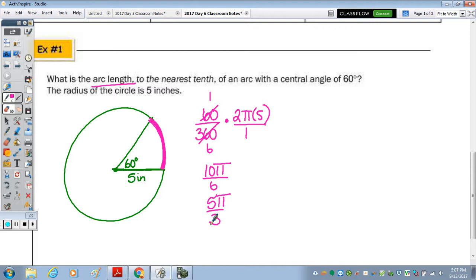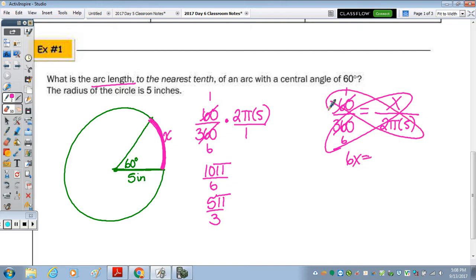The other method is to say, well, 60 over 360 equals, now since I'm trying to find the arc length, I'm going to call this x in the proportion, over the whole circumference for a total of 360, which is 2 pi times 5, or we said before, 10 pi. So if we reduce again 1 over 6 and do a cross product, we have 6x equals 1 times 2 times pi times 5, or 10 pi. Divide by 6 and x is equal to 10 pi over 6, which is the same thing we get here.